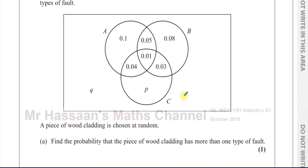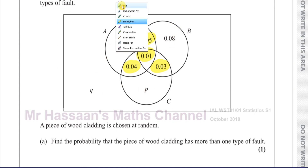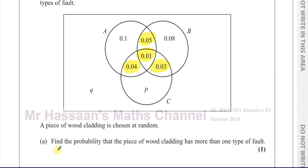It says a piece of wood cladding is chosen at random. Find the probability that the piece of wood cladding has more than one type of fault. So more than one type of fault means two types of fault or all three types of fault. It wouldn't include any of the values outside the overlapping regions. So we just add them together: 0.05 plus 0.04 plus 0.03 plus 0.01 in the middle. That gives us 0.13.